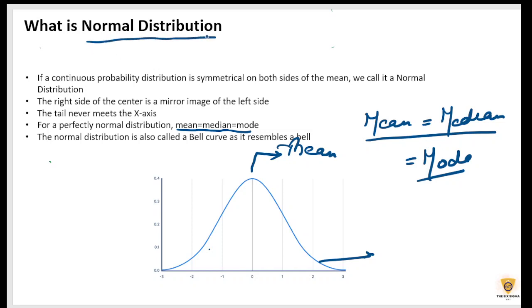Just to remember again, for a normal distribution, mean is equal to median is equal to mode.